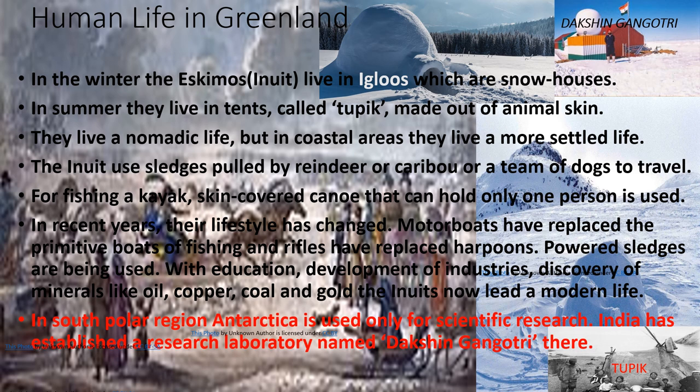In winter, the Eskimos or Inuit live in igloos, which are snow houses. In summer, they live in tents called Tupik, made out of animal skin. The picture of the igloo is at the top and the picture of Tupik is at the bottom right — you see. They live a nomadic life, moving from one place to another. But in coastal areas, they live a more settled life.